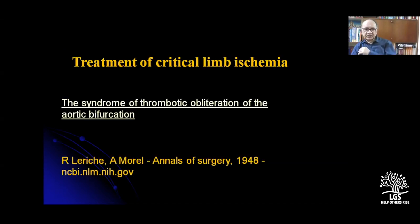The treatment of critical limb ischemia relates to the syndrome of thrombotic obliteration of the aortic bifurcation, which started with the monumental article by René Leriche in 1948 — originally called Leriche syndrome, applicable to chronic lesions. Now, acute Leriche embolic manifestations from acute cardiac events can also be called acute Leriche syndrome.